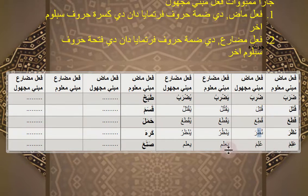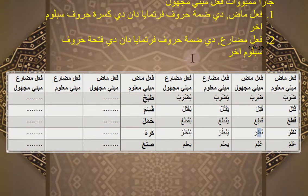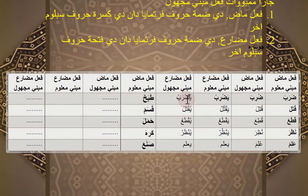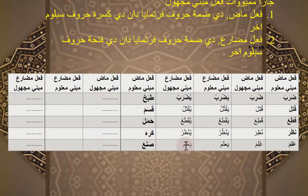Sekarang kalau fi'il mudhare, cara membuatnya: di-dhammah huruf pertamanya, dan di-fathah huruf sebelum akhir. Kalau Zoroba, fi'il mudhare-nya Yadhribu. Yadhribu ini Mabni Maklum. Kalau mau dijadikan Mabni Majul, di-dhammah huruf awalnya yaitu Ya, kemudian dibaca fathah huruf sebelum akhir yaitu Ra. Yadhribu menjadi Yudhrabu. Artinya: Yadhribu memukul, Yudhrabu dipukul.